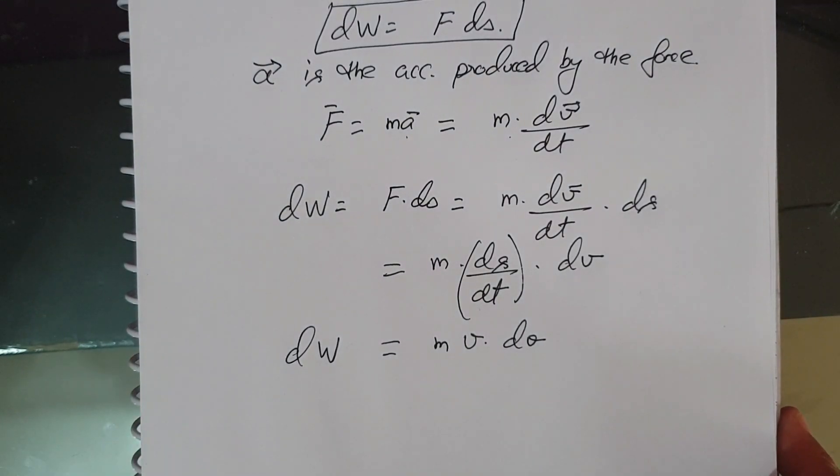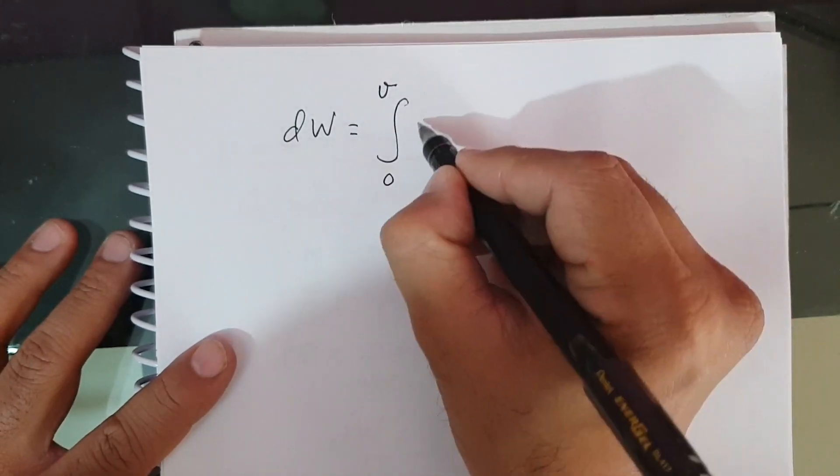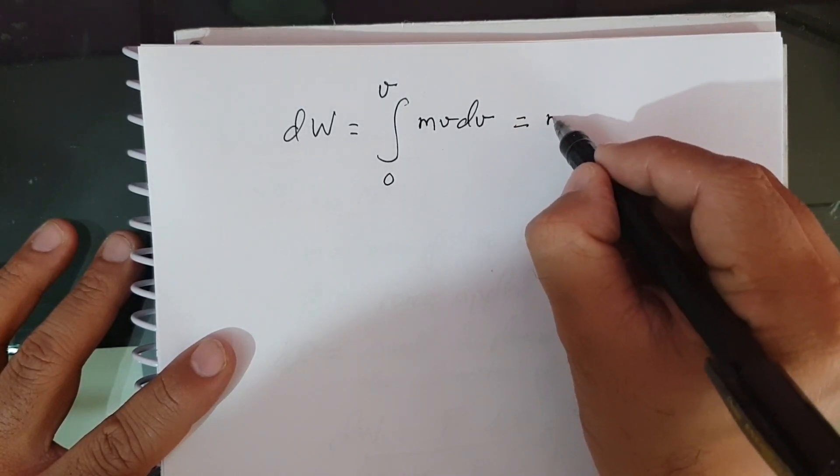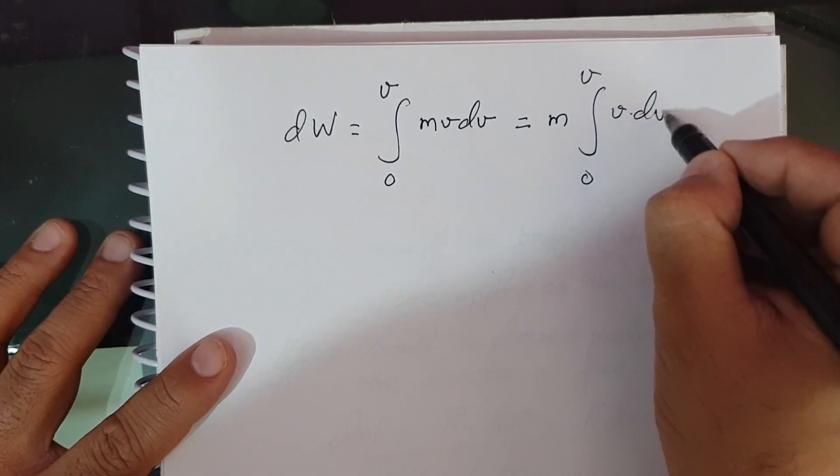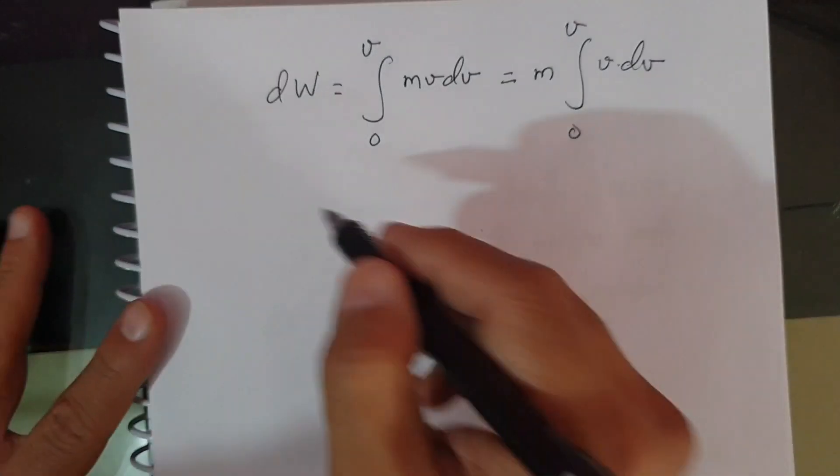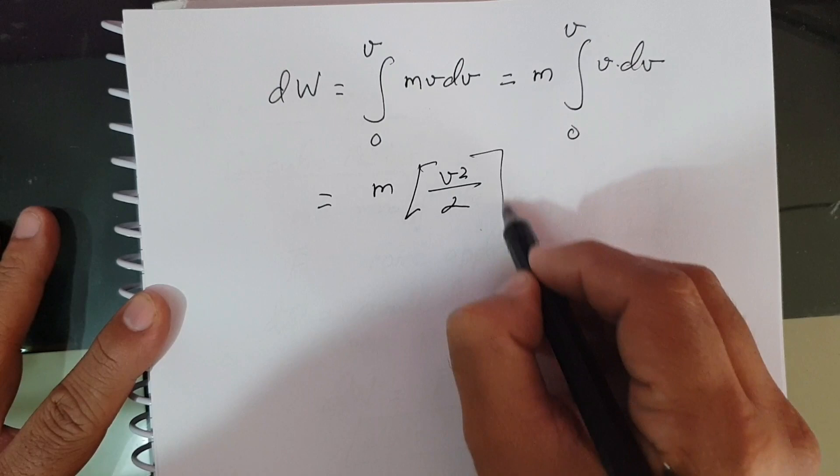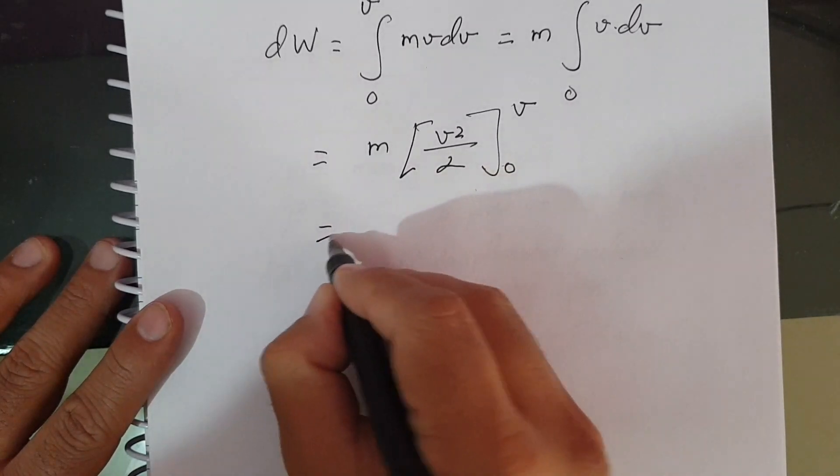Now the total work done by the force in increasing the velocity of the body from 0 to V is: integrating dW from 0 to V equals M V dV. Now M is constant, we can take M out. So this is integration from 0 to V of V dV. V dV will be V squared by 2. So this is M times V squared by 2, 0 to V.